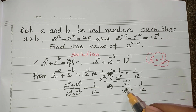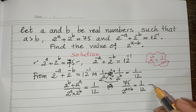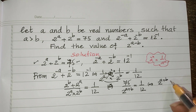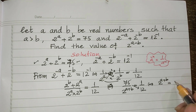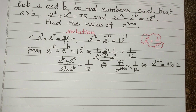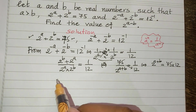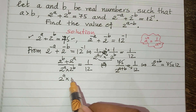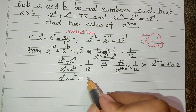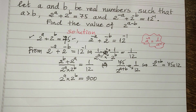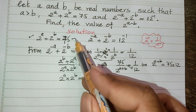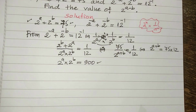So now we get 2 to the power a plus b. We multiply cross: 75 times 12, and therefore 2 to the power a times 2 to the power b equals 900.